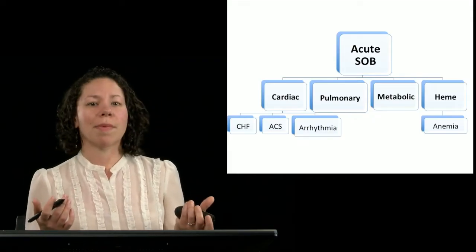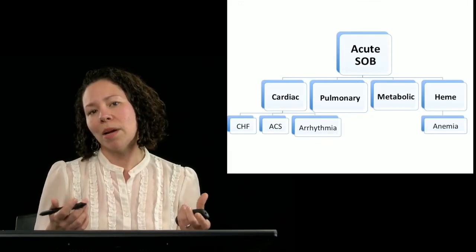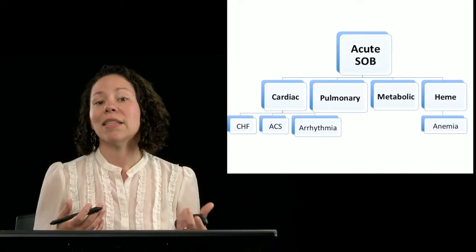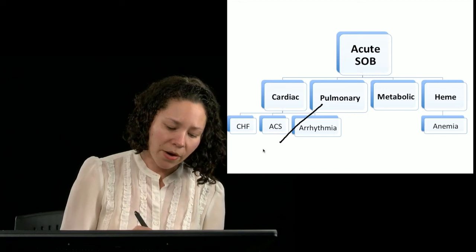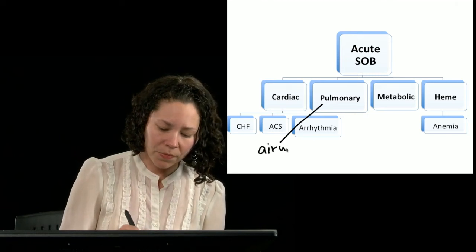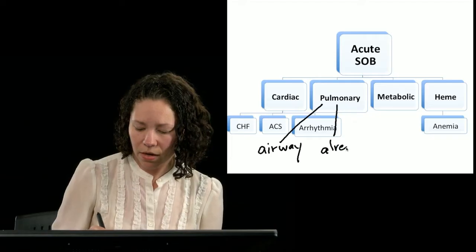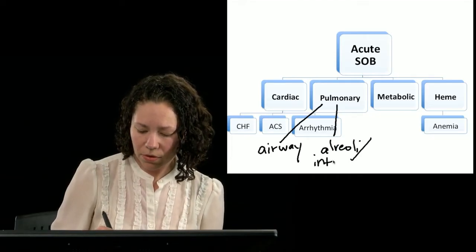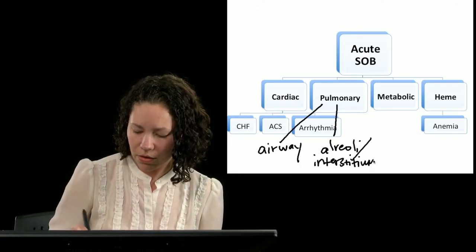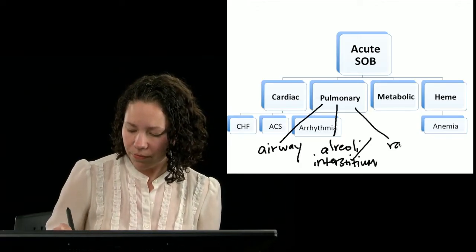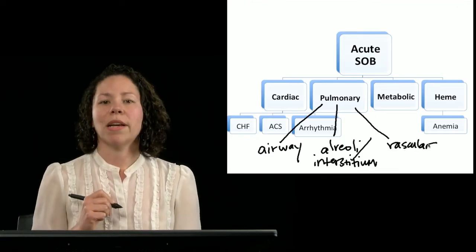But maybe I also might think about this in terms of another level of category. So for pulmonary, maybe I think about this anatomically. And so pulmonary could be airway disease. It could be the alveoli or the interstitium. It could be vascular.